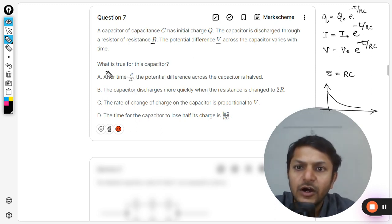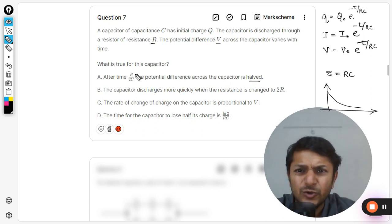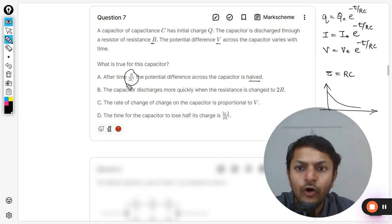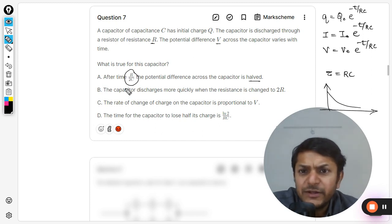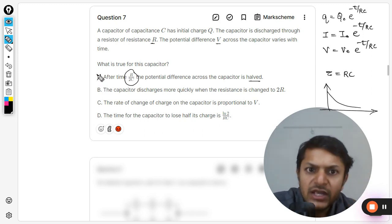Anyways, let us now go for the options. What is true for this capacitor? After the time R/2C, the potential difference is halved. So my students, first of all, R/2C is not anything like RC is the time constant. So R/2C is not anything. When you read R/2C, clearly it means option A is wrong.